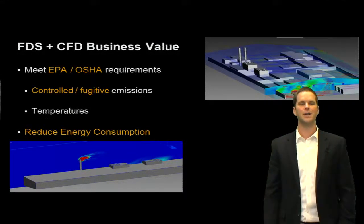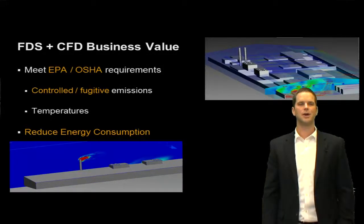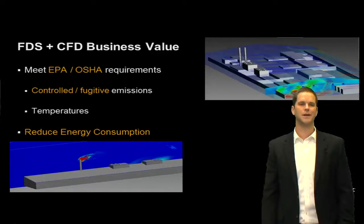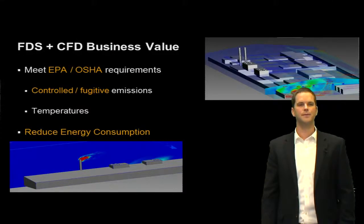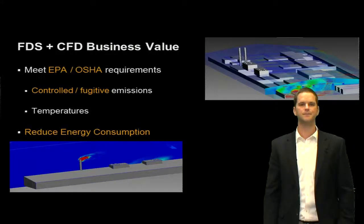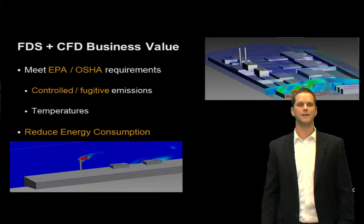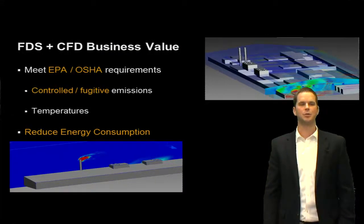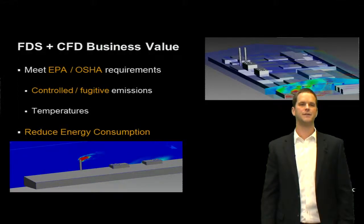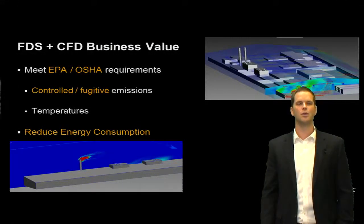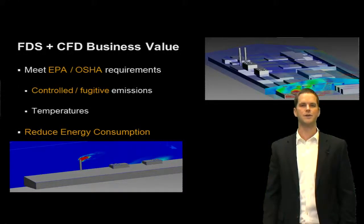What is the business value behind FDS and CFD? Well, it allows our clients to meet EPA and OSHA requirements, prevent shutdowns, fines, and loss of on time. It also allows them to look at controlled and fugitive emissions. Controlled emissions would be outside of the plant leaving from the stack; fugitive would be inside the plant leaving from equipment. Our clients study temperatures to ensure the thermal comfort and safety of their workers, and they'll also use CFD to reduce their ventilation requirements, and thus reduce energy costs and energy consumption.